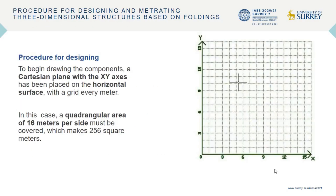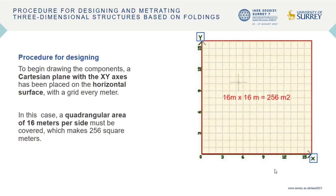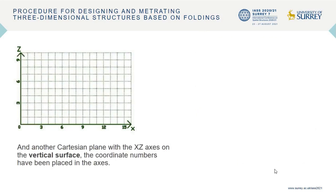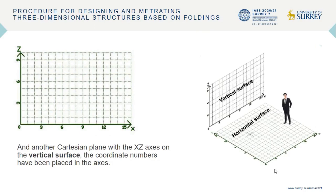Procedure for designing: to begin drawing the components, a Cartesian plane with the xy-axes has been placed on the horizontal surface with a grid every meter. In this case, a quadrangular area of 16 meters per side must be covered, which makes 256 square meters. Another Cartesian plane with the xz-axes is placed on the vertical surface, and the coordinate numbers have been placed in the axes.